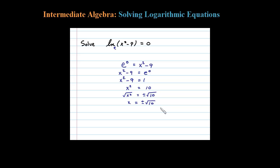Now we have to go back and check to see if those are good solutions. Notice here when I substitute square root of 10 in, plus or minus doesn't matter. When you square that it'll be positive 10, 10 minus 9 is 1, natural log of 1 certainly is 0. You can check that on a calculator, so both of those check out.